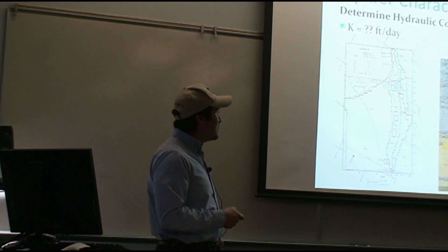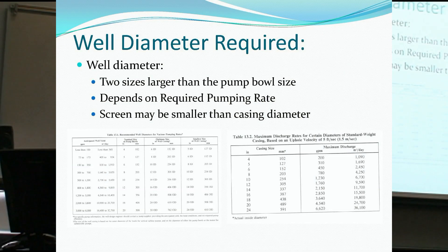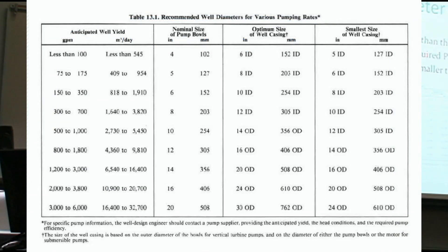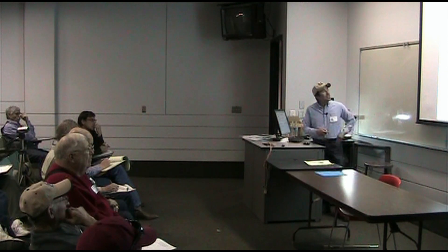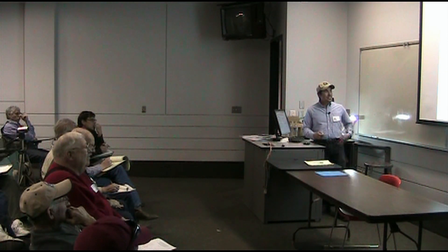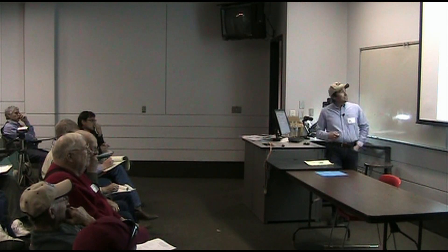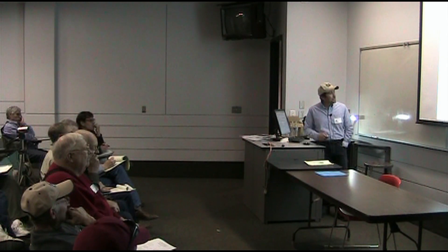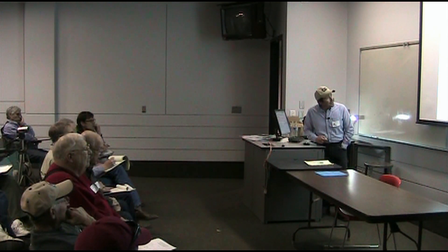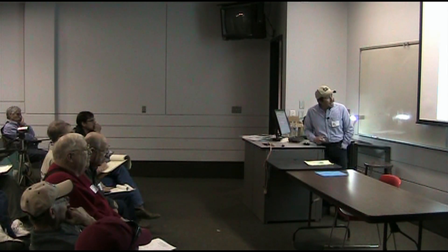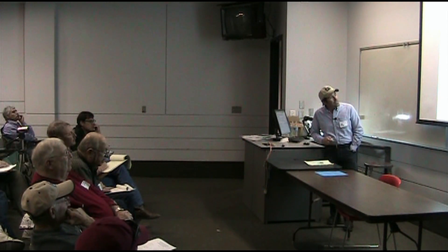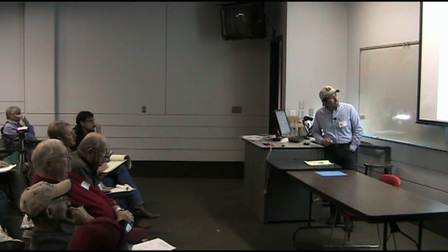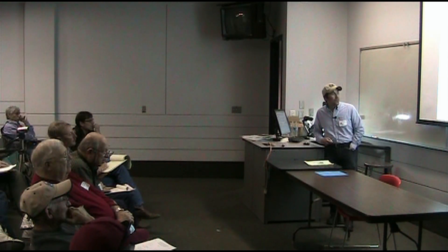As Dr. Samani mentioned, the well needs to be two inches larger than the size of the pump, and this will depend on the desired pumping rate. A small flow pump will be smaller in diameter versus a higher volume well with a bigger pump. For example, for 2,000 gallons per minute, the optimum size would be 20 inch but the minimum would be 16 inch — which is what you most commonly see here in the valley. For a 16-inch well, the maximum recommended discharge rate would be 2,850 gallons per minute.